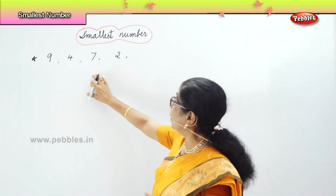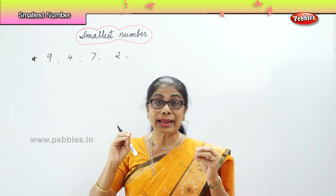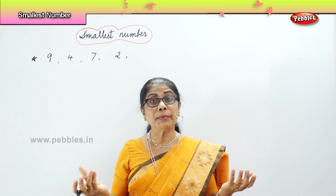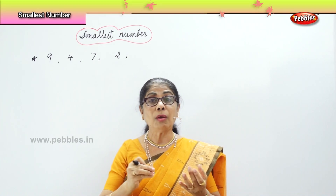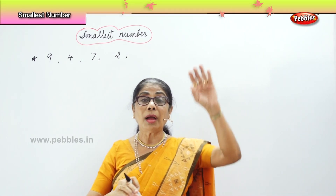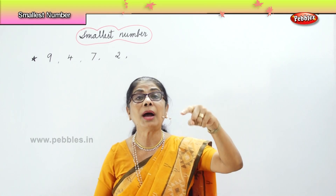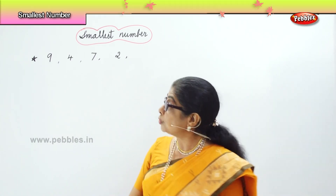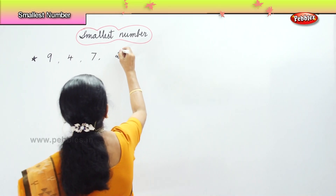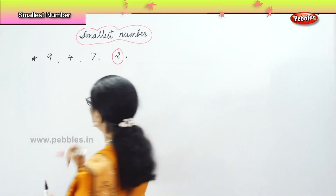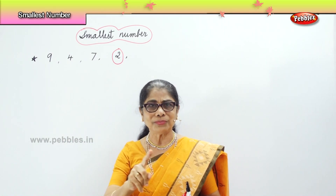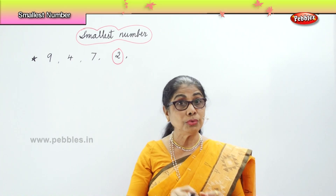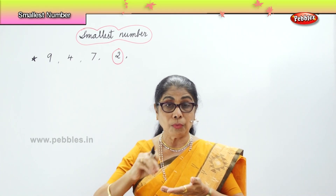Among the 4 numbers, you must select the smallest number. Who got the least number of chocolates? Count and see. I got the least number. How many do you have? Number 2. So we know the smallest number among these is 2. You know to count. You know to count how many chocolates you have.